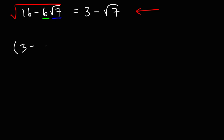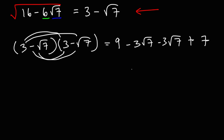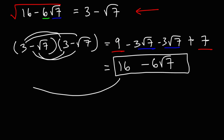FOIL (3 minus the square root of 7) times itself: 3 times 3 is 9. Then we have 3 times the square root of 7, and another similar term. Finally, negative root 7 times negative root 7 is positive 7. Combining like terms: 9 plus 7 is 16. And negative 3 minus 3 is negative 6, with the square root of 7 attached. We get what is inside of the square root symbol, so this answer is indeed correct.